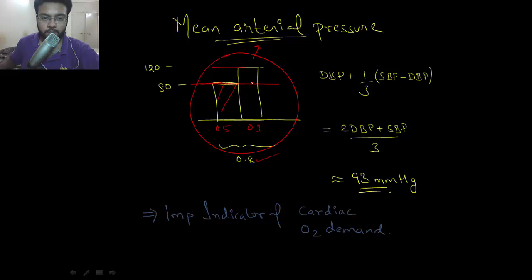Let's say this diastolic blood pressure is remaining constant for 0.8 seconds. So you take diastolic blood pressure simply as it is, and you want the mean of this one. 0.3 is approximately one-third of 0.8 seconds, so you take one-third of systolic minus diastolic. You calculate this: it turns out to be two times diastolic blood pressure plus systolic, all divided by three.